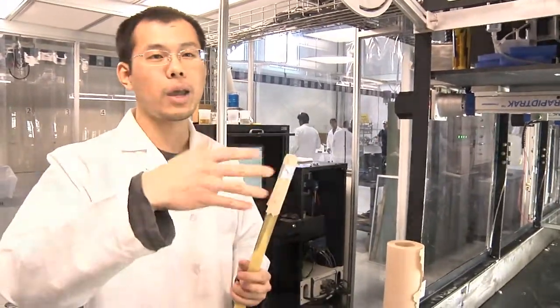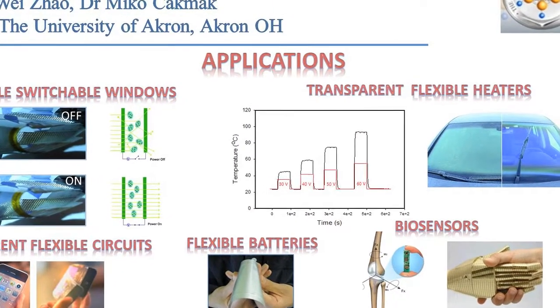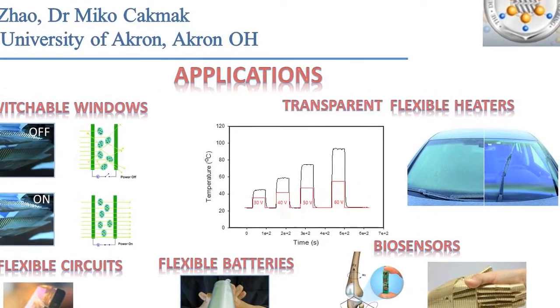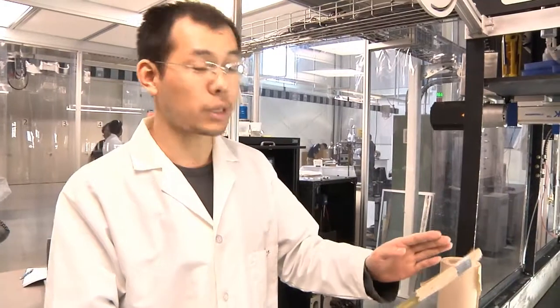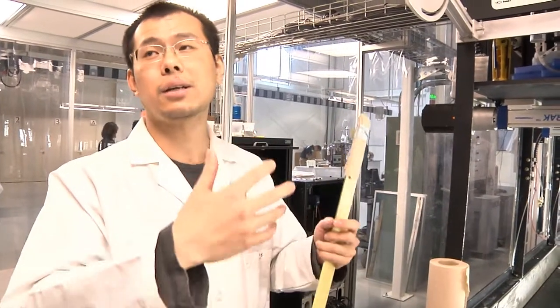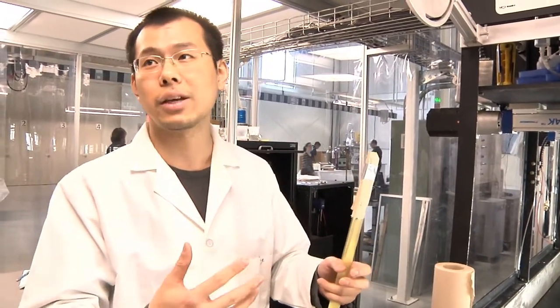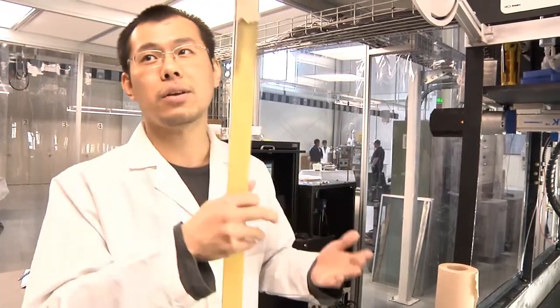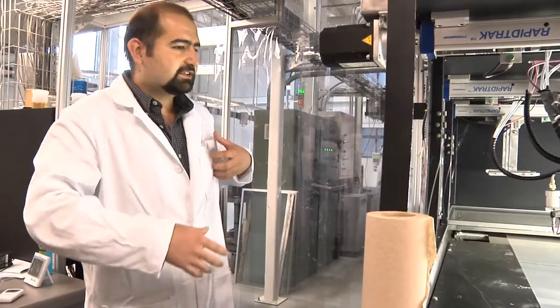For example, for a car windshield, if we embed these transparent, conductive polymer nanofibers in it, it's totally transparent and conductive. So we can heat the windshield. We can also do multi-layer casting.